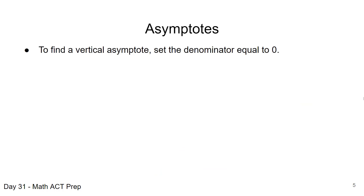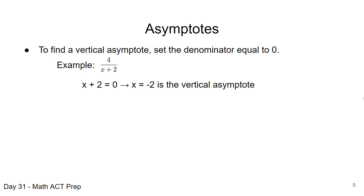When we're looking at a vertical asymptote, we're usually given a problem like this example with a rational function — something with a denominator. To find the vertical asymptote, we set the denominator equal to zero. When working with fractions or rational expressions, we cannot have zero in the denominator — that's an undefined expression. So the vertical asymptote comes into play when the denominator equals zero. Setting x plus 2 equal to zero and solving, we get x equals negative 2.